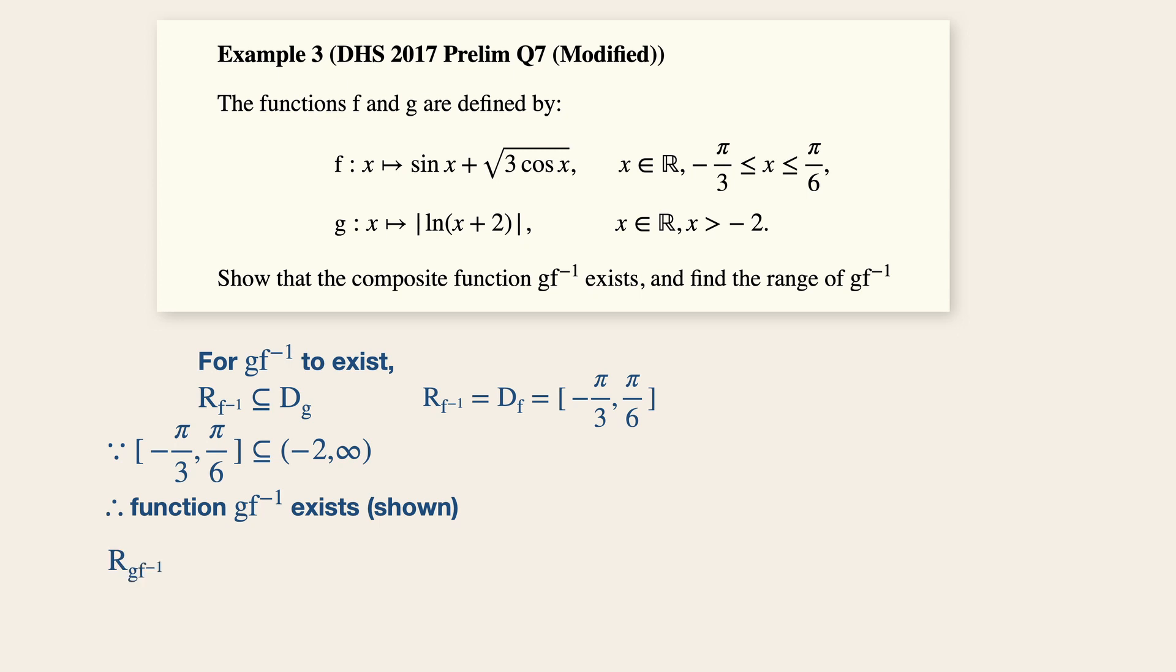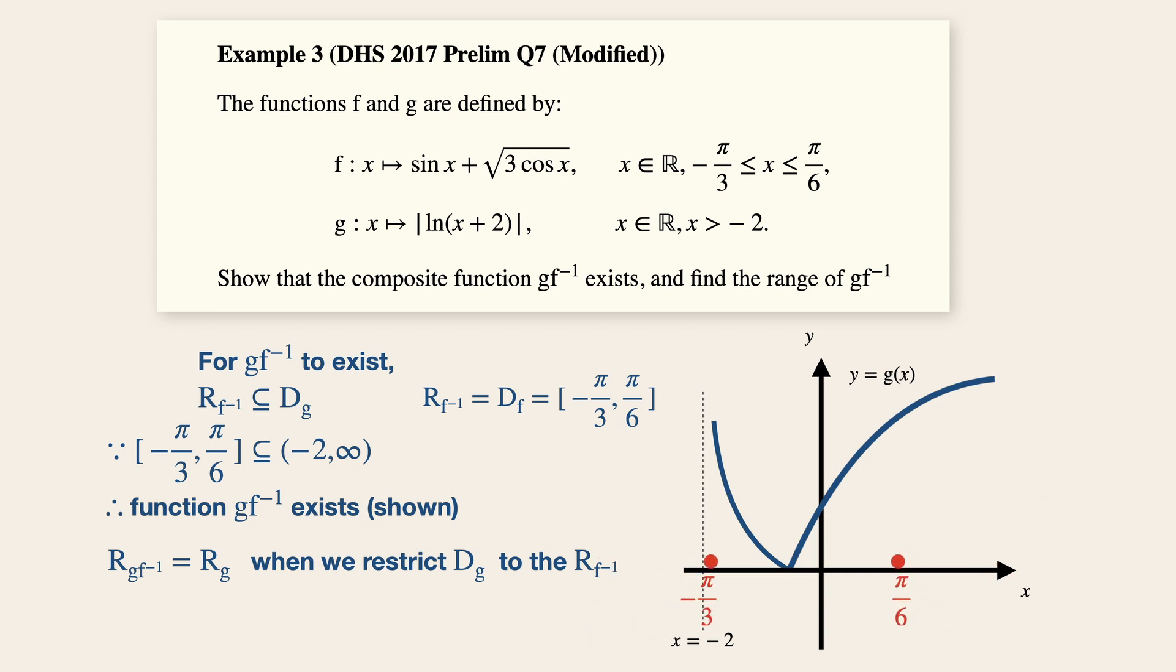Now to get the range of G F inverse, it is simply the range of G. But remember, we must restrict the domain of G to the range of F inverse. In other words, negative pi over three to pi over six is the new domain, denoted by these red circle dots over here. So let's find the range by starting from the lowest value, which is y equals to zero.